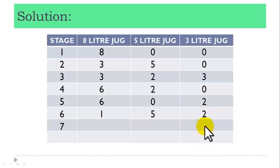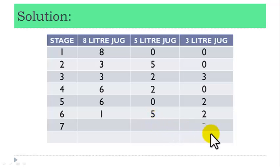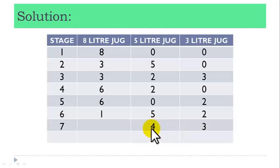Stage 7: fill the 3-liter jug with fluid from the 5-liter jug. Then we are left with 4-liter fluid in the 5-liter jug, and we still have 1-liter fluid in the 8-liter jug.